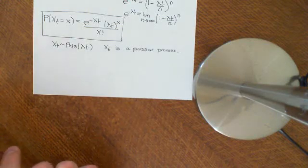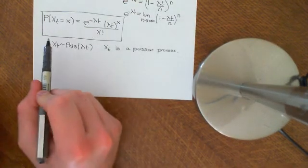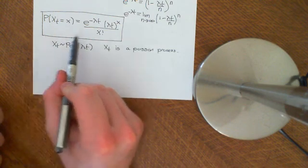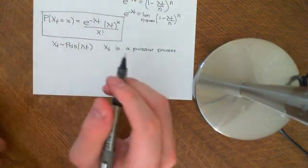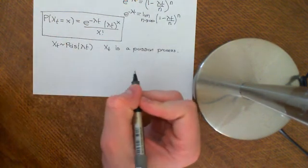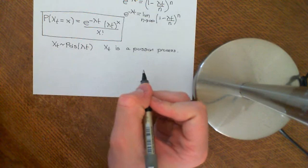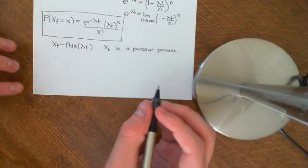In this next video, now that we have had time to recap the Poisson distribution, let's see how the Poisson distribution is related to the exponential distribution.